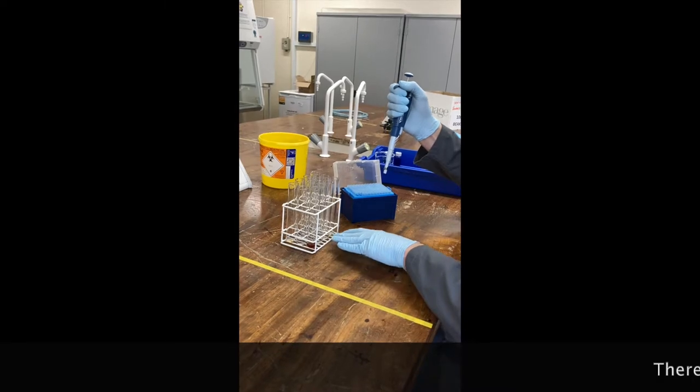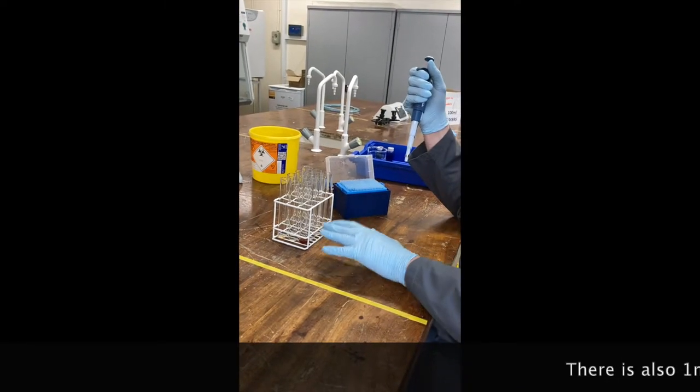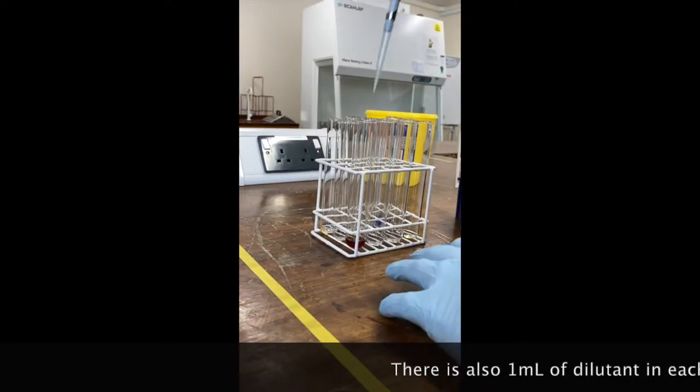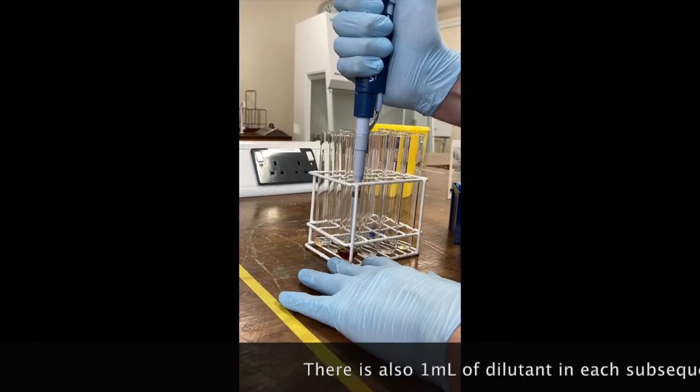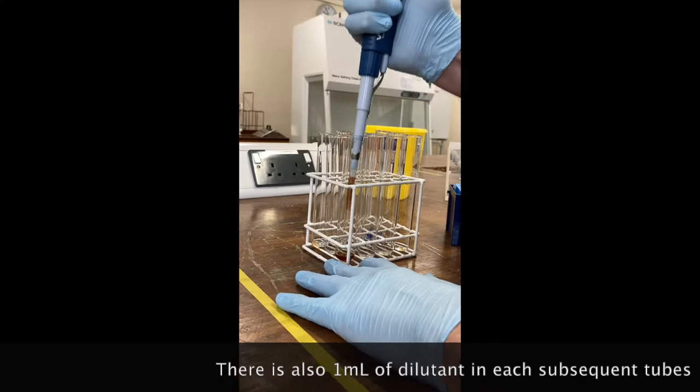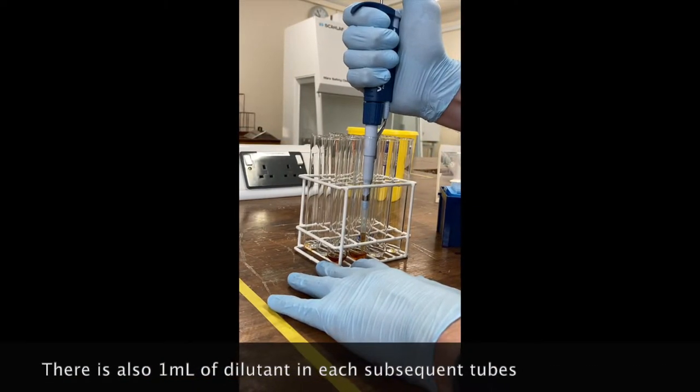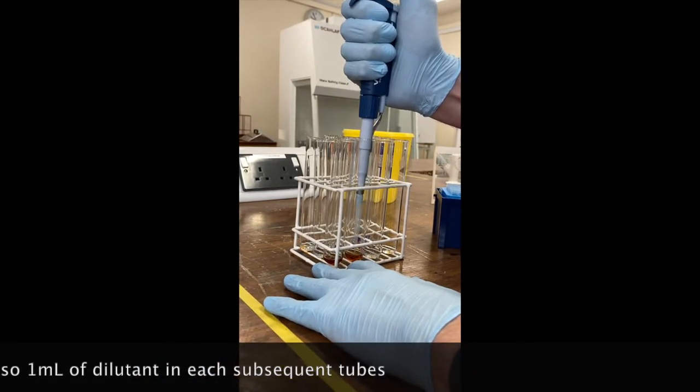and all I'm going to do is transfer one mil from the top standard down. Put the pipette on, go down, I'm going to take one mil up, making sure there's no air bubbles in the pipette. I'm just going to mix that by pipetting up and down gently into the second tube.